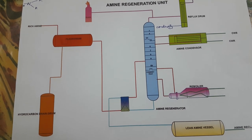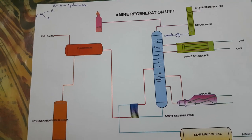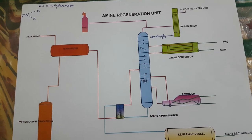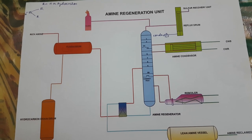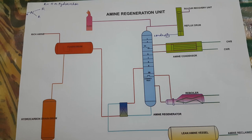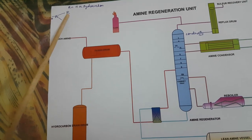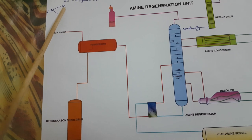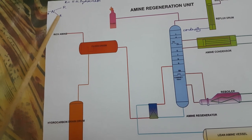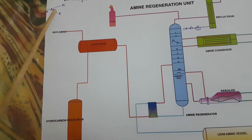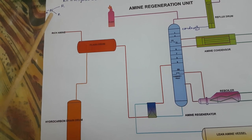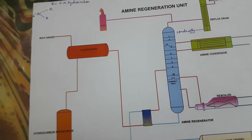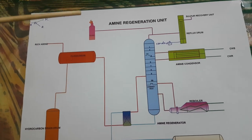Now we will go deeper. First I would like to give you the definition and technical terms used in the amine regeneration unit. Amines are organic compounds derived from ammonia when hydrogen atoms are replaced by an alkyl chain. Ammonia is NH3, and when a hydrogen atom is replaced by an alkyl chain, an amine is formed. For example, amine may be RNH2, R2NH, or R3N.